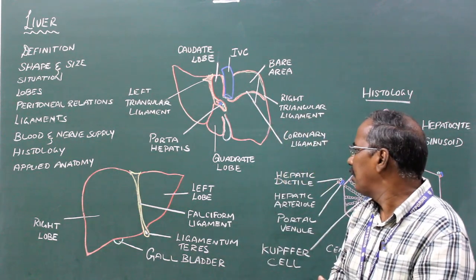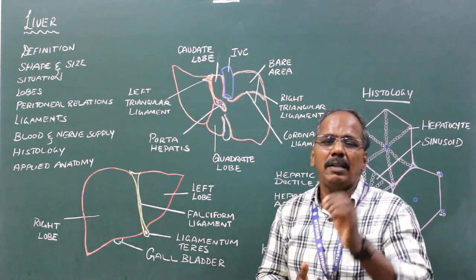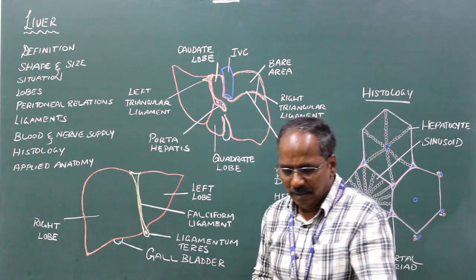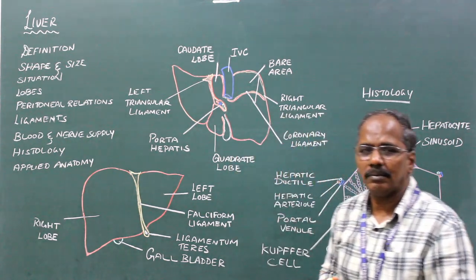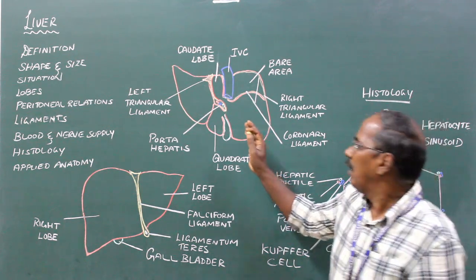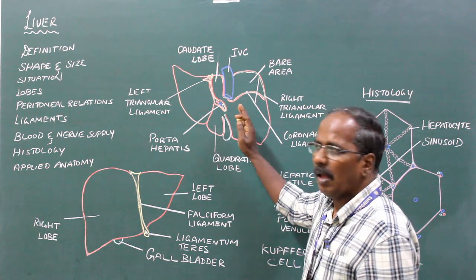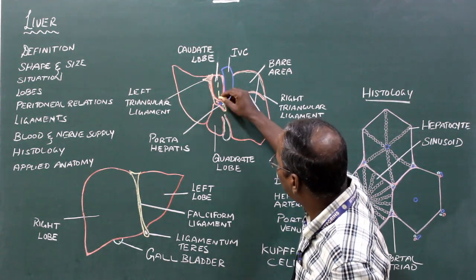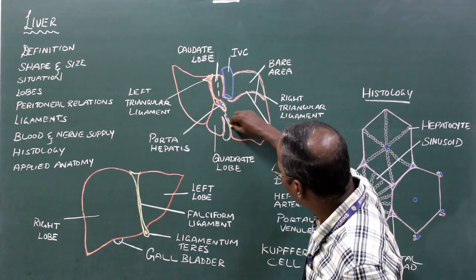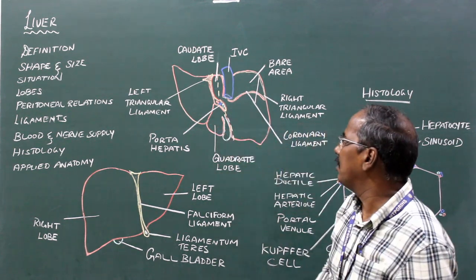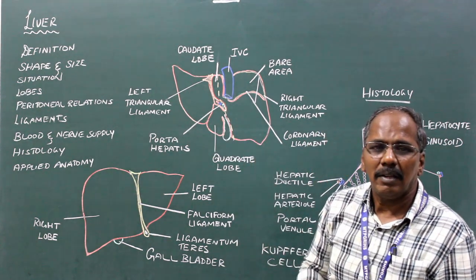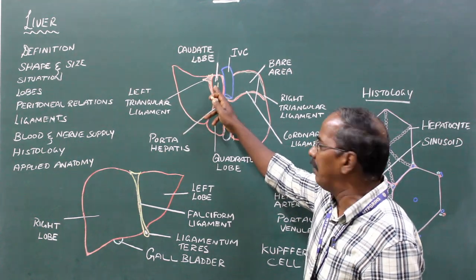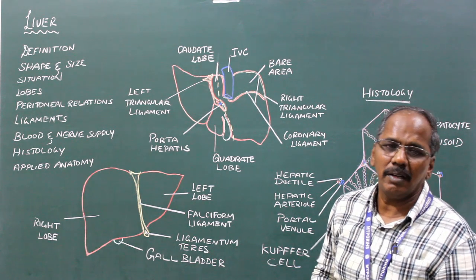Functional lobes. Functionally, it consists of two lobes: right functional lobe and left functional lobe. The right functional lobe is formed by the right lobe of the liver excluding the left half of the caudate lobe and the quadrate lobe. The left functional lobe includes the left lobe, the left half of the caudate lobe, and the entire quadrate lobe.